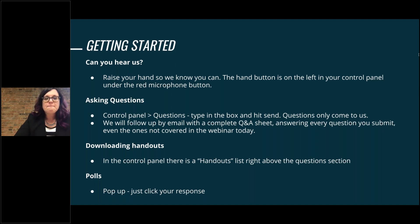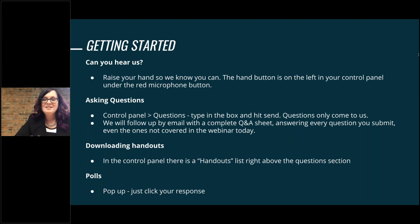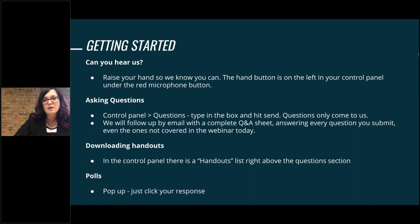If you can't hear us, or if you have questions at any time during the webinar, go into your control panel under the questions section. Just click on questions, type in the box, and hit send. Questions will only come to us — they won't be seen by everybody. We'll have a short period at the end to address questions live, and we'll answer every question submitted, create a Q&A sheet, and send that out to all attendees. We'll anonymize those things, of course.